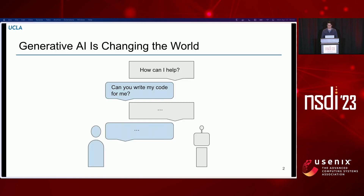Recently, there's been the trend towards generative AI, which is having a massive impact on the world and changing many industries. A lot of us are familiar with things like ChatGPT, which is now powered by GPT-4, and there's also things like DALL-E and Stable Diffusion, which are empowering virtual assistants with many new capabilities.